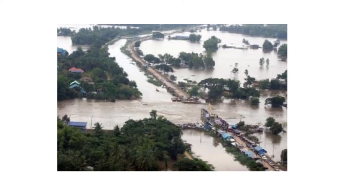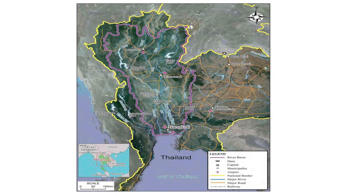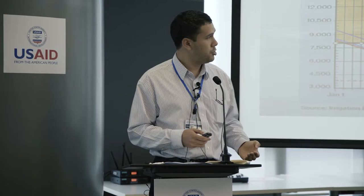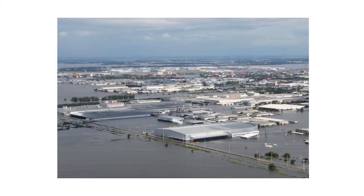The other big issue was the management of the two major dams upstream. The ruling party at the time instructed dam managers to protect farmers, so they didn't open the dams as much as they could. As a result, this added 17% more water downstream, which then hit the industrial estates in Ayutthaya — where Honda, Canon, and many other major companies produce goods.